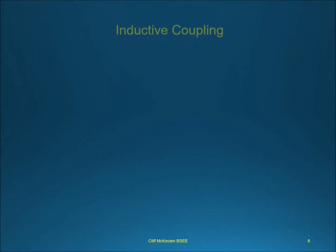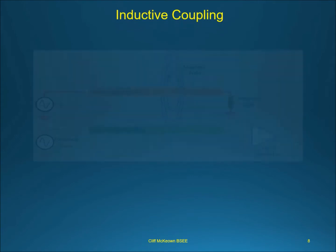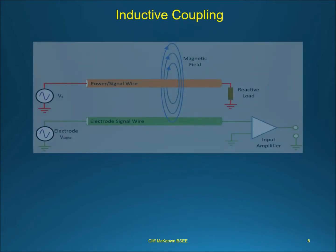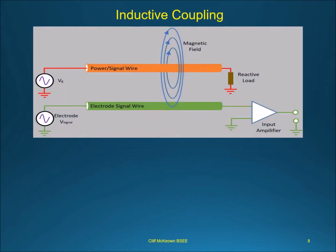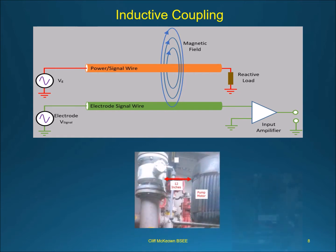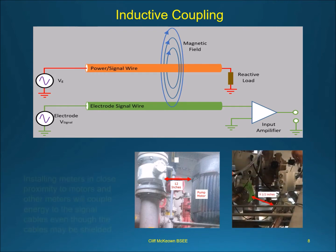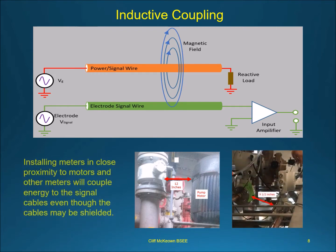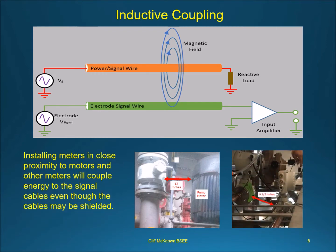Installing meters in close proximity to motors and other meters will couple energy to the signal cables even though the cables may be shielded. Cable shields do not completely block EMI but simply mitigate it. Again, distance from the source is a key factor here, since the further away from the source, the weaker the EMI.